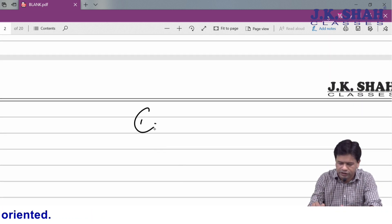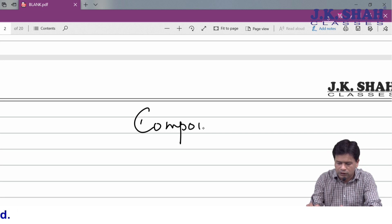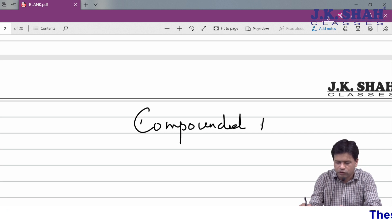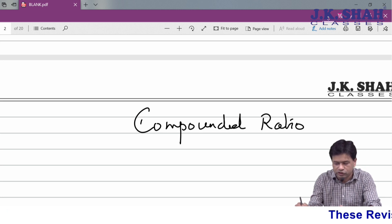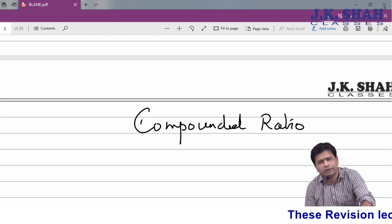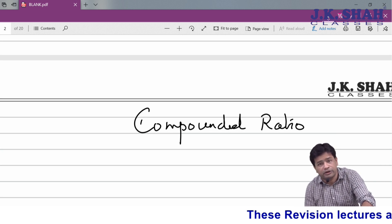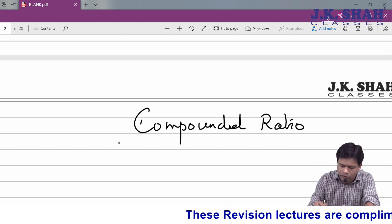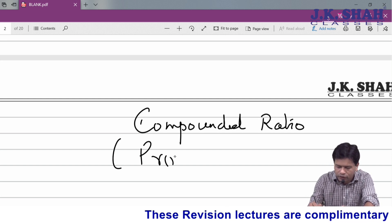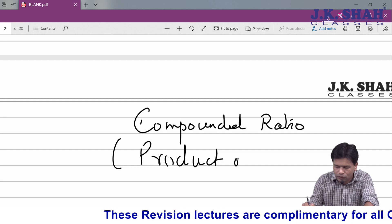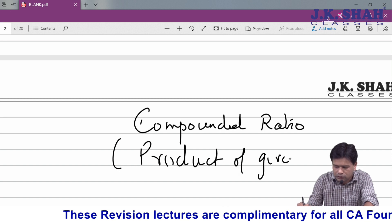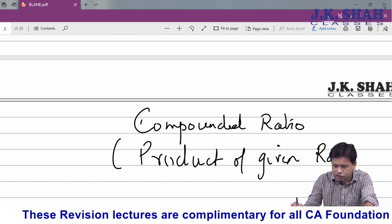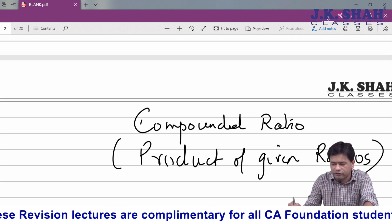We have a concept of compounded ratio. Whenever you come across this word compounded ratio, you'll find many questions based on it in the study material and ICAI module. Compounded ratio means the product of given ratios - you consider the given ratios, multiply them, and you get the compounded ratio.